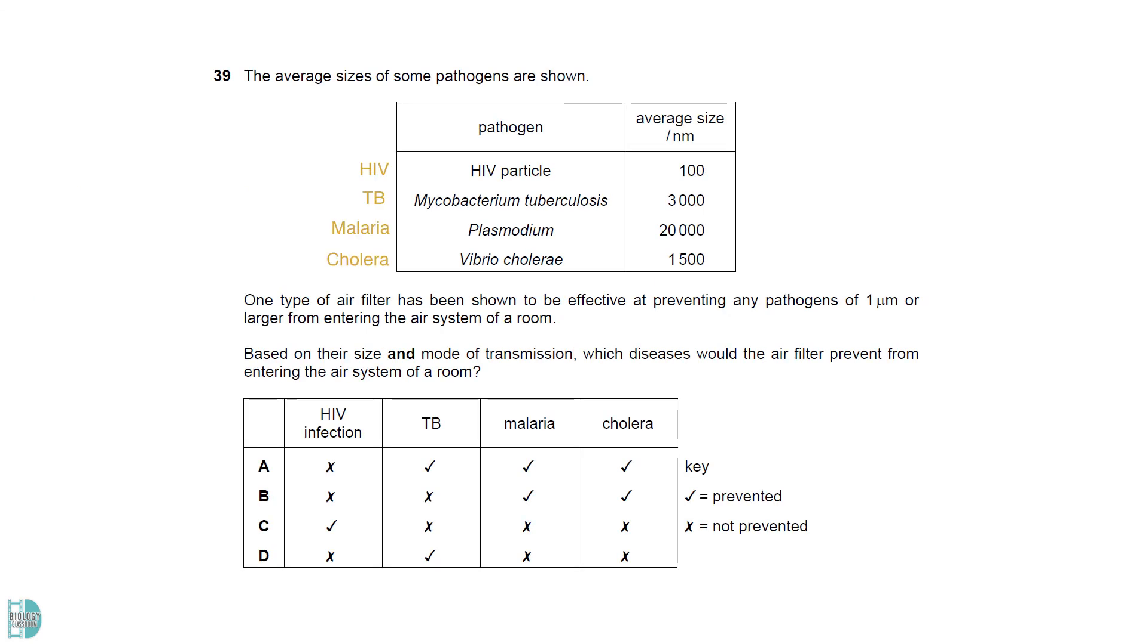First, you have to identify the disease caused by these pathogens. Then, convert their sizes to micrometers. You will find out that only mycobacterium tuberculosis that cause TB is large enough to be blocked by the air filter.